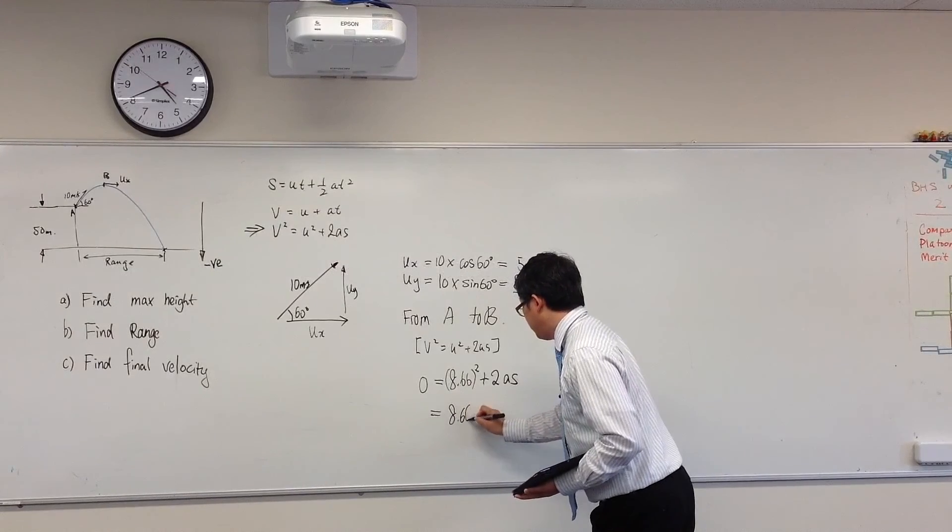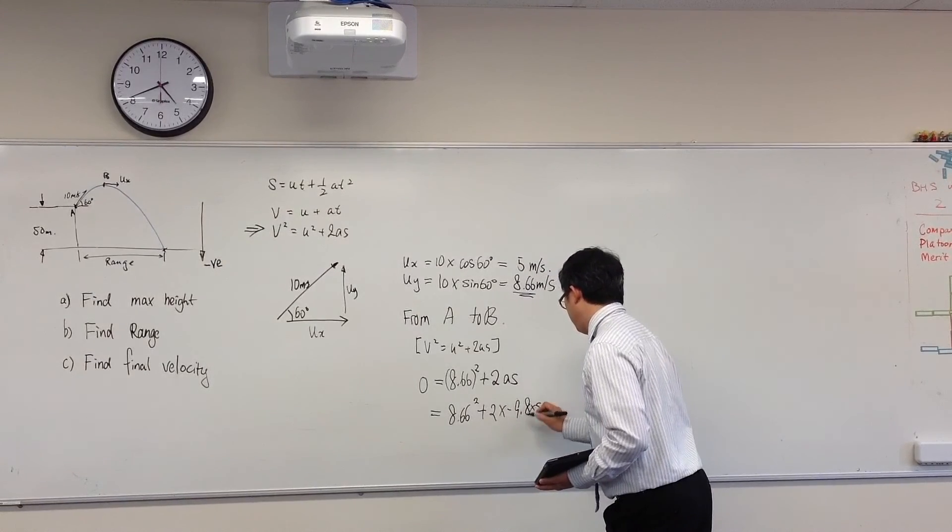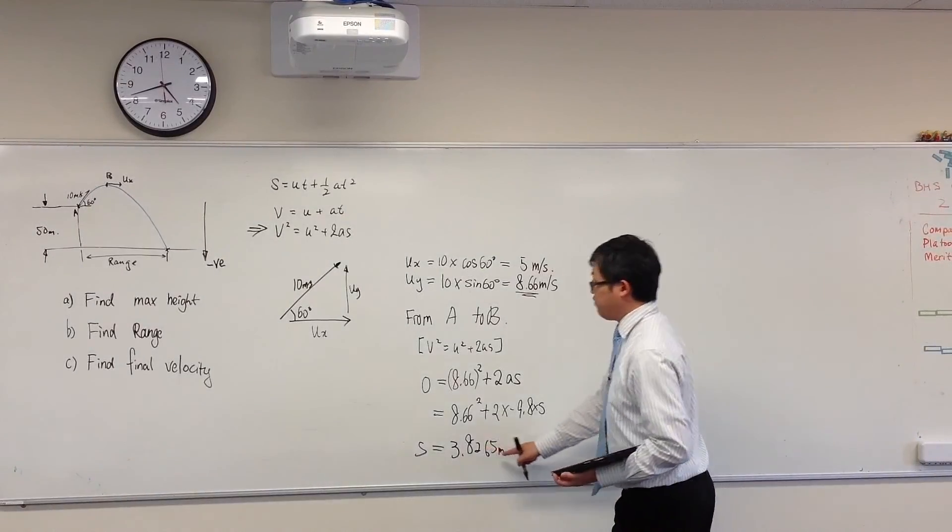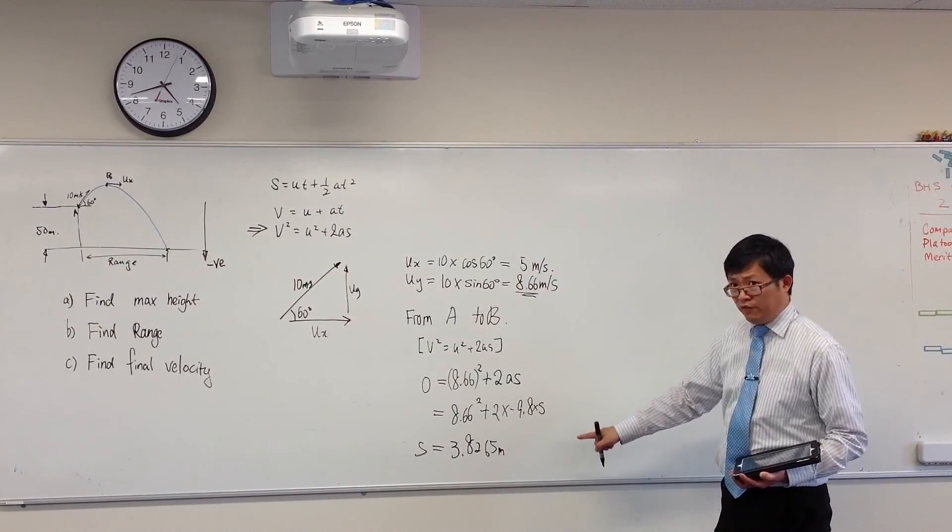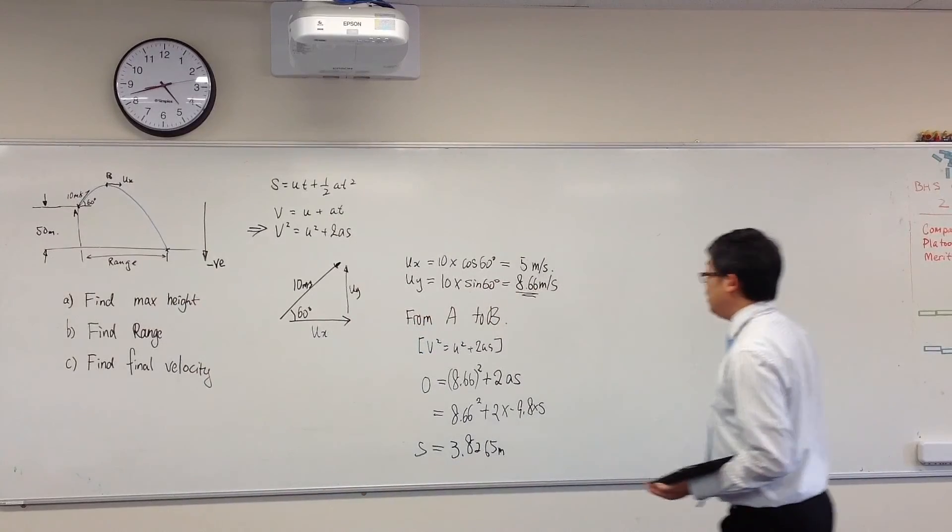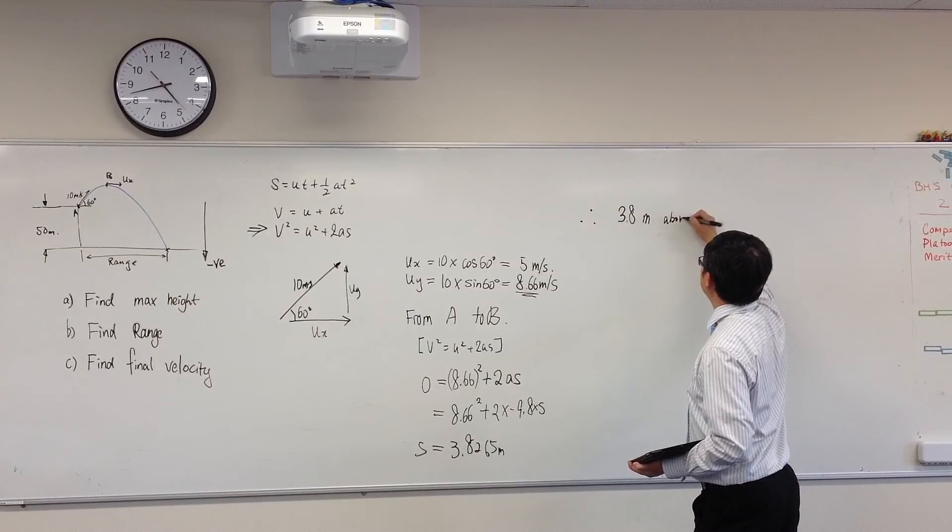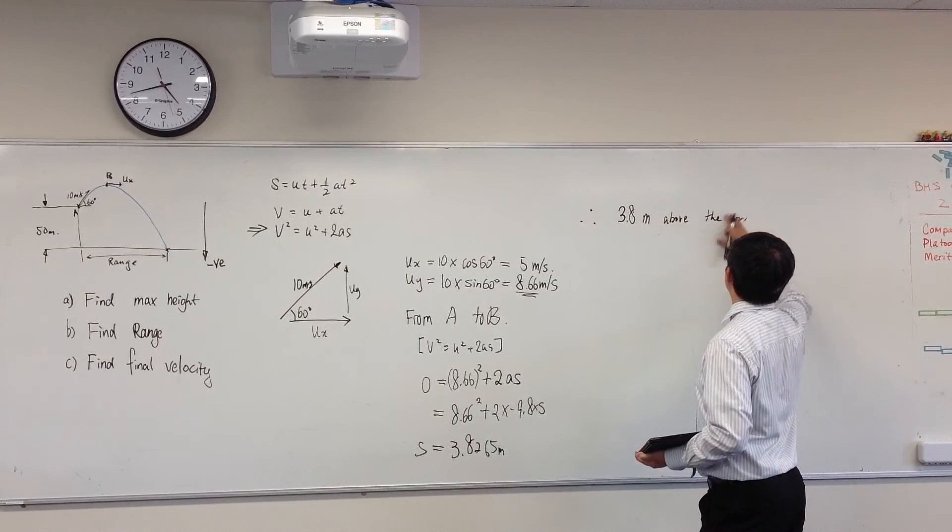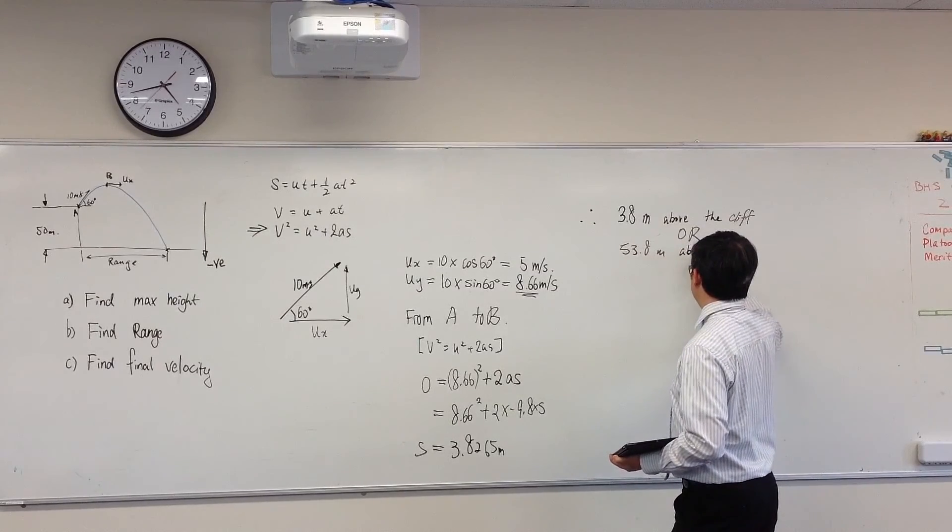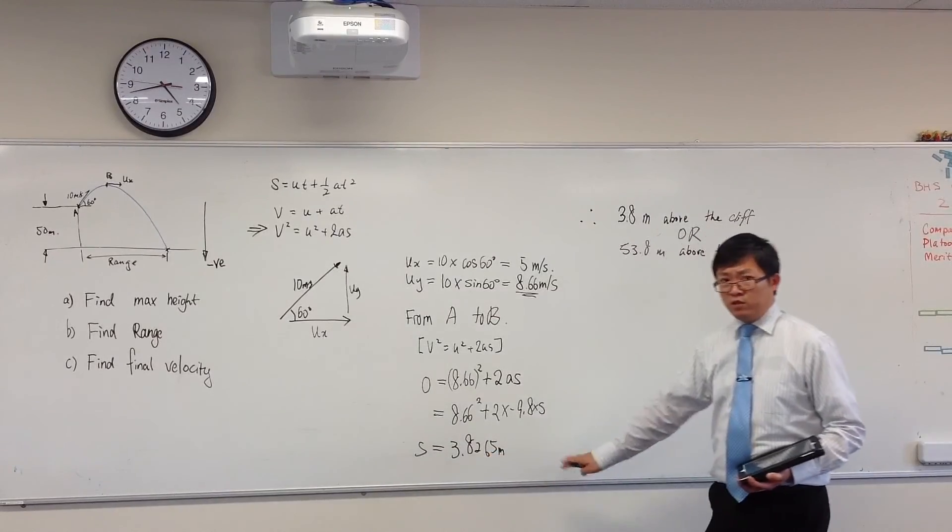So this would mean that we can solve for s now. And with luck, you should be able to get the answer to be 3.8265 meters. But do not write that in the response, because the significant figure is wrong. If you look back at the question: 2SF, 2SF, 2SF - well, guess what? Stick with 2SF. In this case, you need to be careful. You can say that it's either 3.8 meters above the cliff, or you can write 53.8 meters above the ground. But do not just write 3.8265 and pretend you've finished the job.